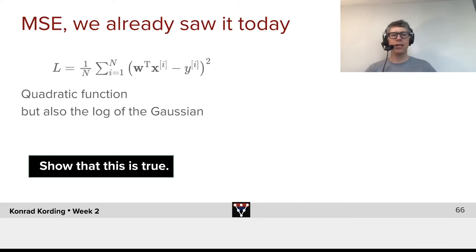So, another possibility is to use the mean squared error. We already saw it today. We use it when we do linear regression, which is simply the squared loss here. It's a quadratic function. But it's also the logarithm of the Gaussian. We want you to just show that if you write down the equation for a Gaussian and you calculate the log of that, that you're going to get minus, like scaling of course, this equation.